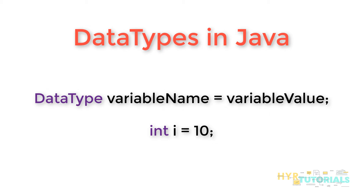For example, if we are storing the value 10 into a variable, you need to specify what this 10 is — you know that it is an integer value. So you need to tell the compiler this is an integer value, and to tell the compiler, we specify the data type. So here in Java, we have so many data types and we will discuss about each and every one in detail.